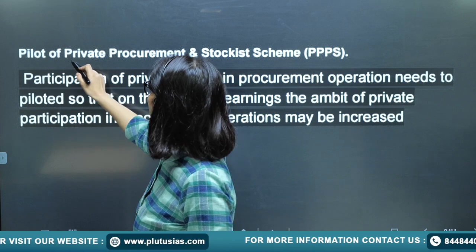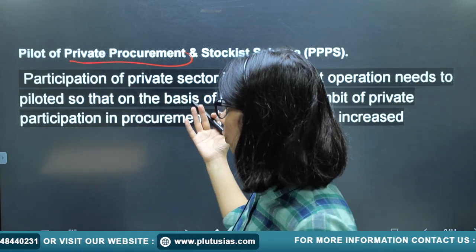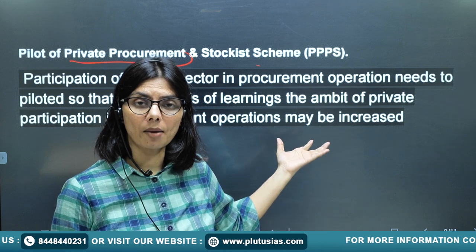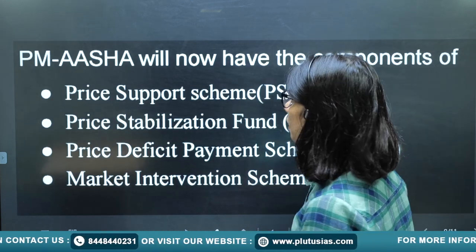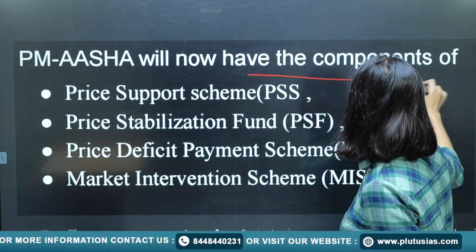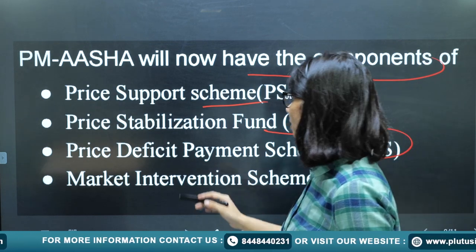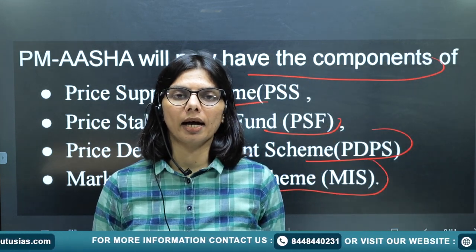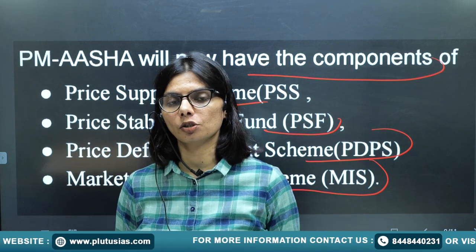There was also a private procurement pilot scheme where private players procured crops from farmers and the government paid them, but this has been discontinued. Currently, the revamped scheme components are the Price Support Scheme, Price Stabilization Fund, Price Deficiency Payment Scheme, and Market Intervention Scheme. Through market intervention, the government will protect both farmers and consumers and help the country become self-sufficient in oil and pulses.